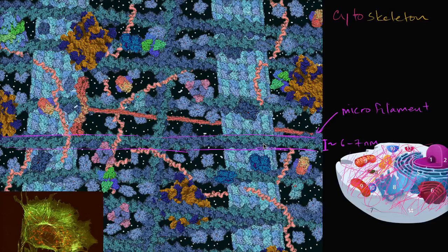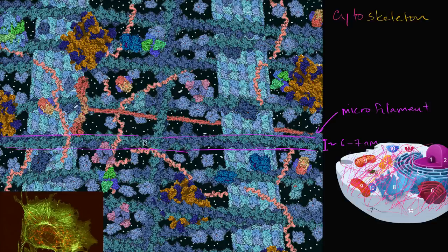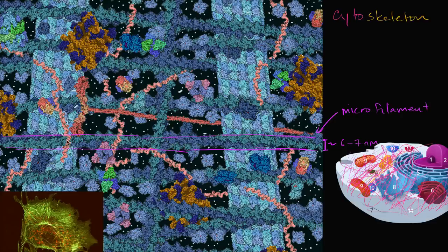But these things are incredibly important. They help give the structure of the cell. They're made up of actin proteins. So you can see there's kind of these two actin ropes wrapped around each other.